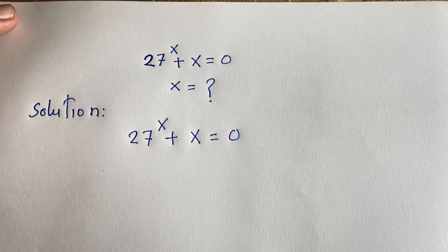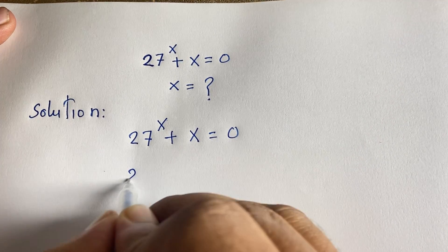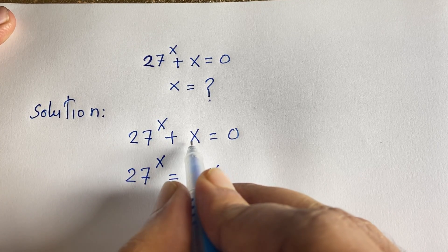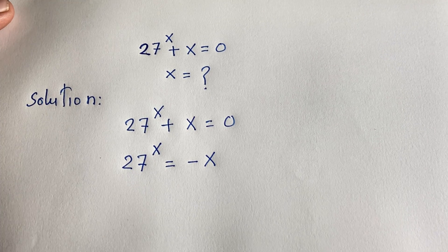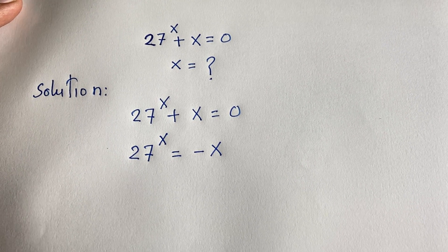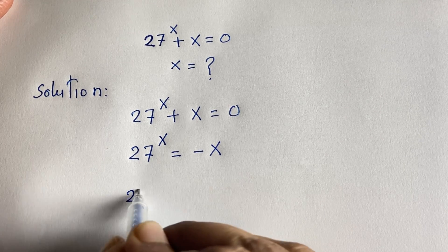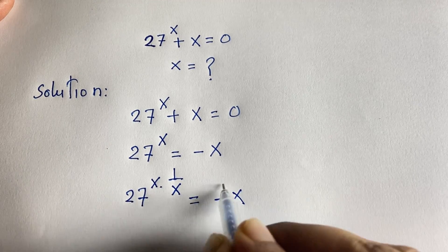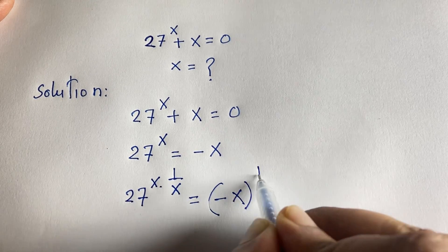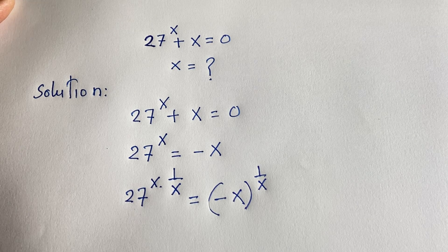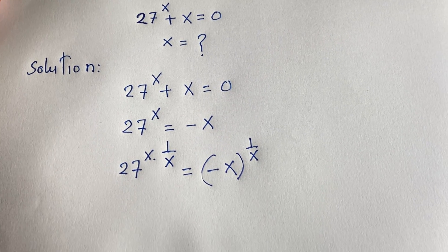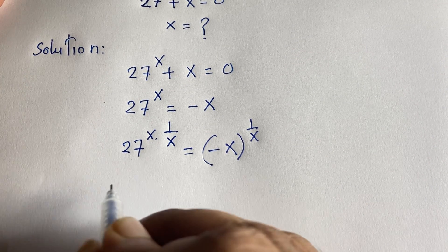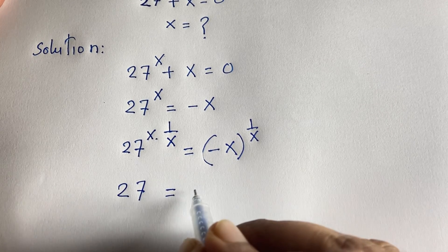The equation becomes 27^x = -x. Moving x to the right side gives negative x. Now I apply exponent 1/x to both sides: 27^(x · 1/x) = (-x)^(1/x). On the left side, x and 1/x cancel, so we find 27 = (-x)^(1/x).